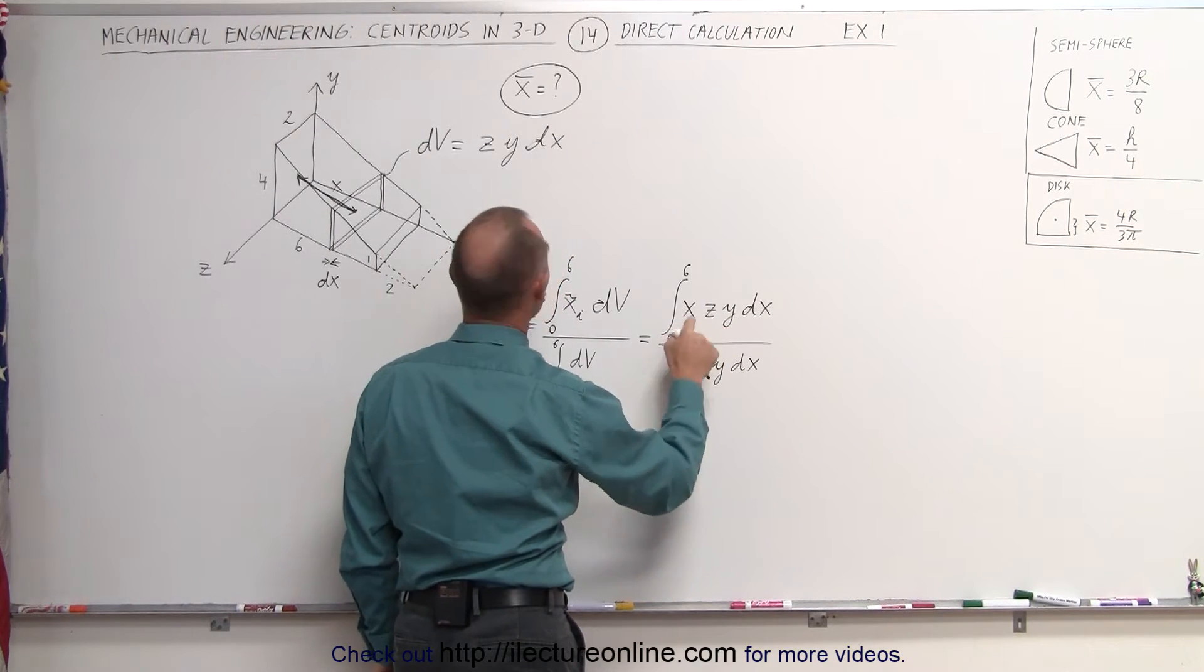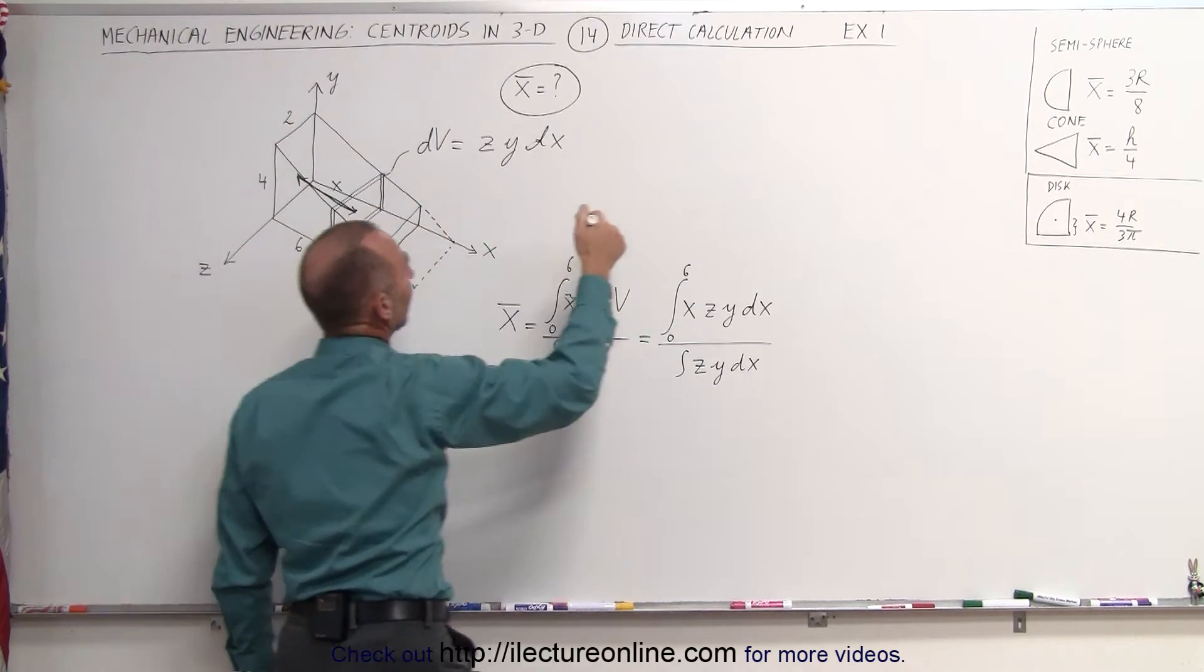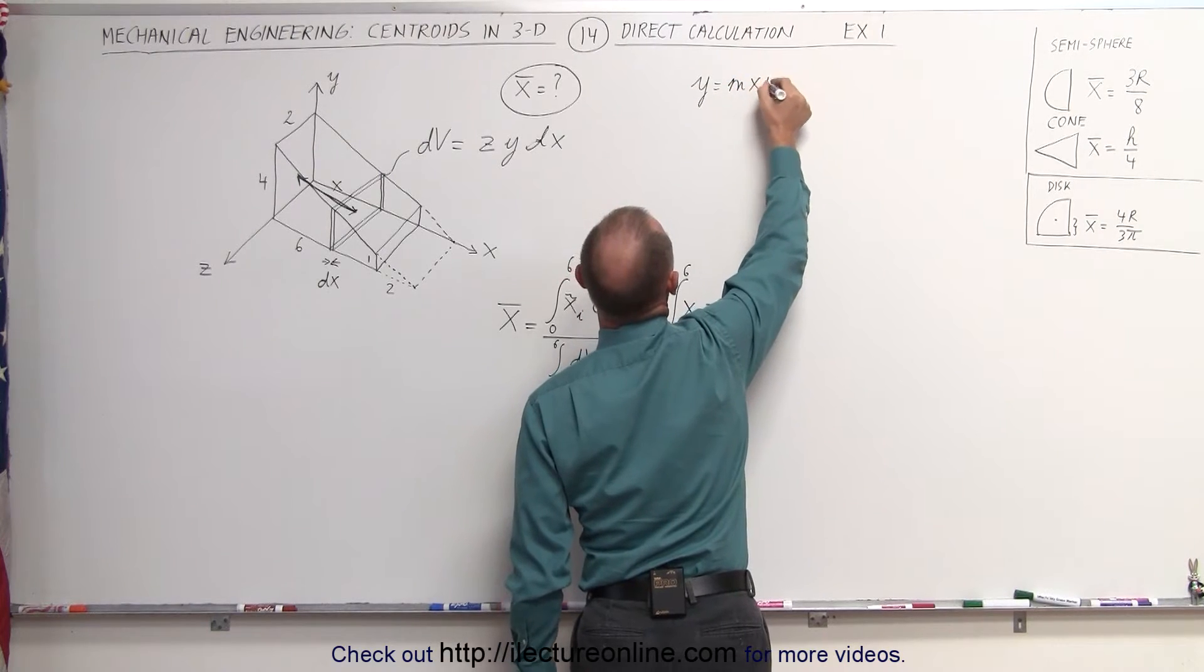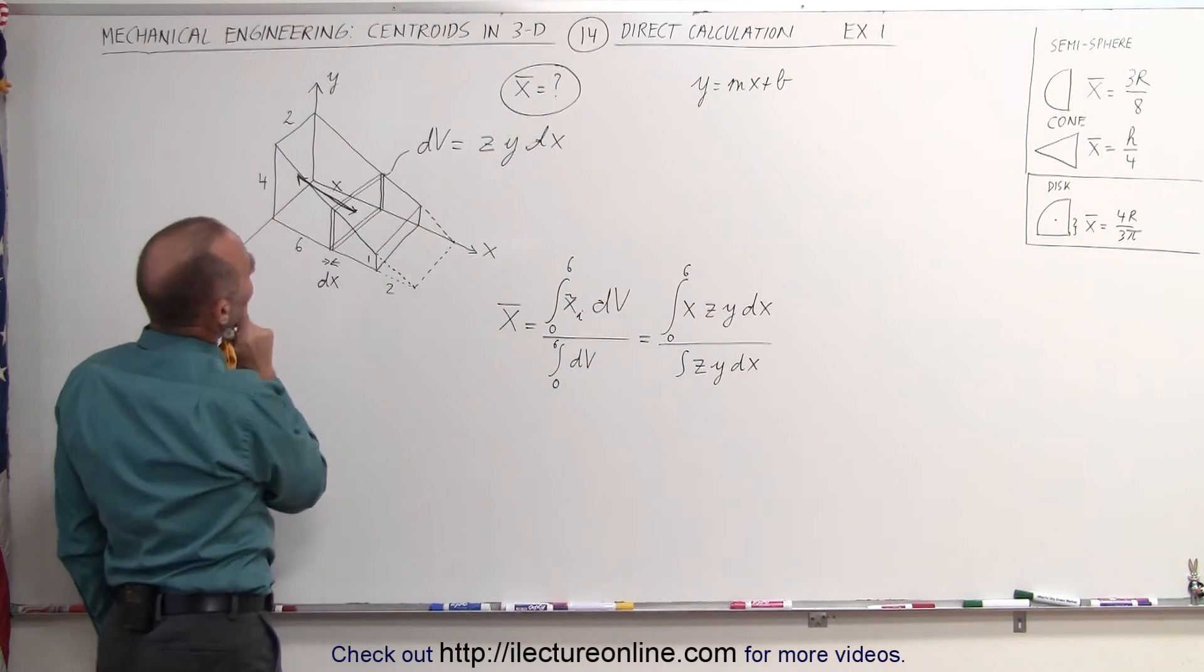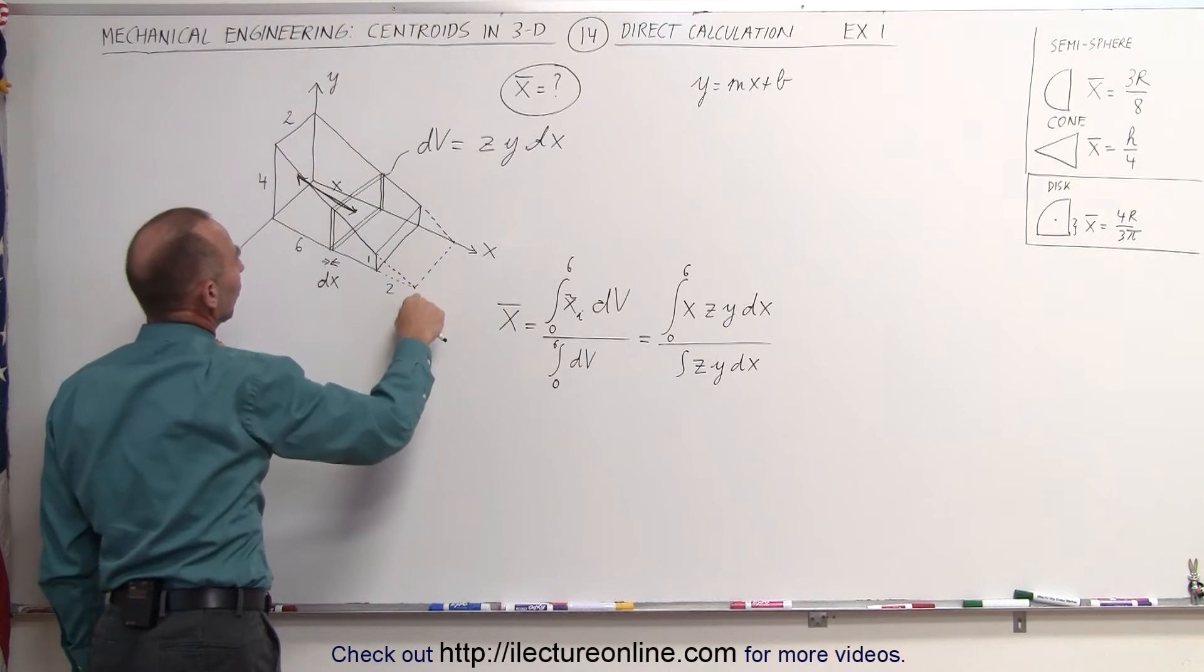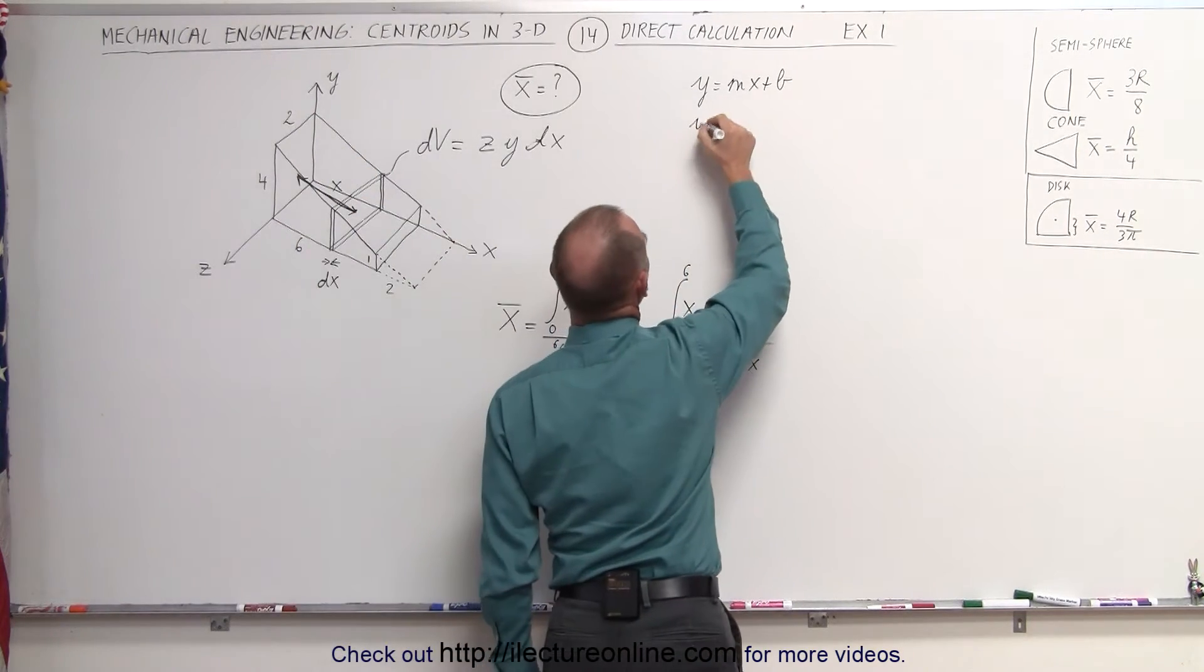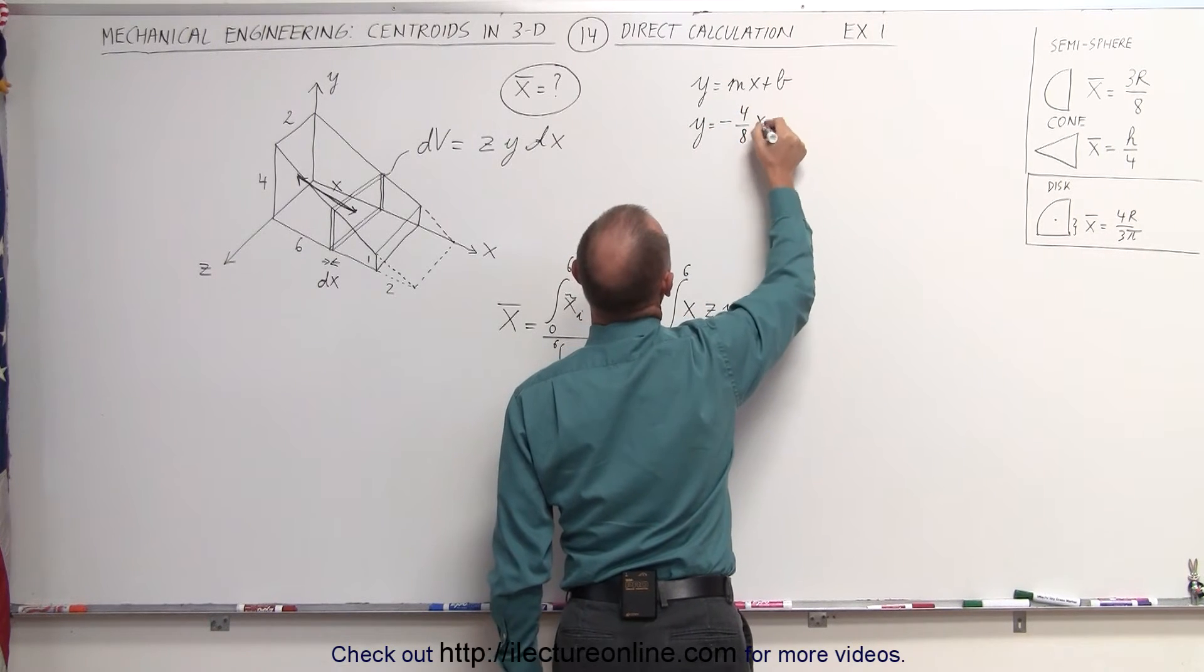And y and x have a relationship along this line right here. If you take a look at this line, that has the structure of a y equals mx plus b equation, which of course is a straight line. We need to find the slope. The slope will be the drop. You can see that it drops from 4 to 0 in a distance from 0 to 8. So that means that y is equal to minus 4 divided by 8 times x plus,